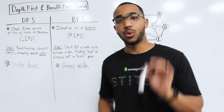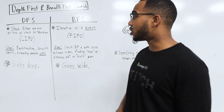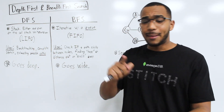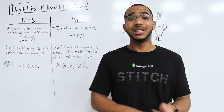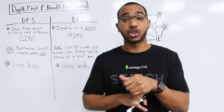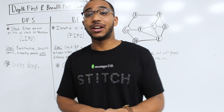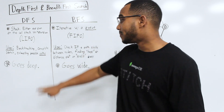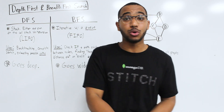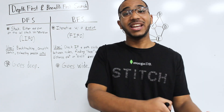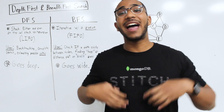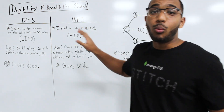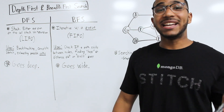When do we use depth first search? We use depth first search for backtracking, complete search, exhausting search possibilities, and finding all the paths. Depth first search is about going deep — it goes deep into a path, explores all of it, and then comes back outward to decide whether to go on to another path.